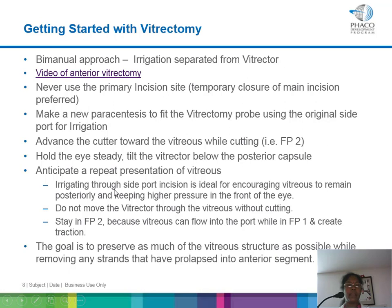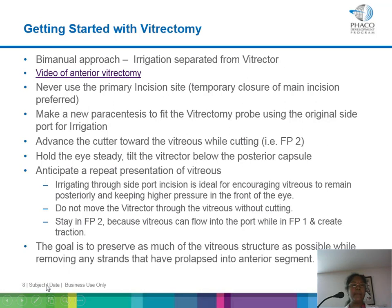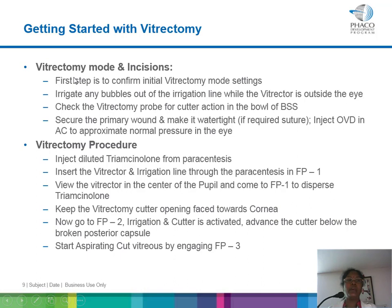For temporary closure: close the main incision, make a new paracentesis for the vitrectomy probe, advance the cutter toward the vitreous while cutting, hold the eye steady, and tilt the vitrector below the posterior capsule. Anticipate more vitreous — don't panic. When you first see a PC rent, you may not see much vitreous, but going deeper there will be more. Irrigate through the side port incision. Do not move the vitrector through vitreous without being in foot pedal 2.